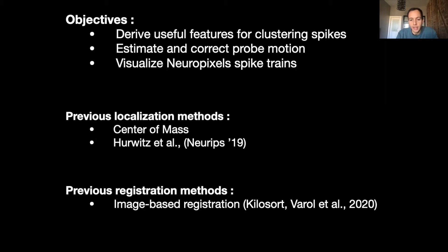On the registration side, the methods that are used and implemented in different spike sorters such as YASS and Kilosort largely rely on spike rasters to estimate the motion. A recent decentralized registration approach has been proposed by Varol et al. at ICASSP 2020.